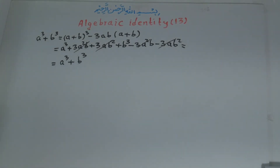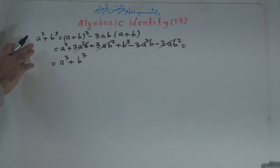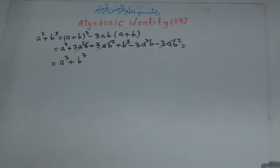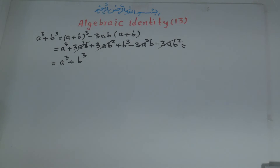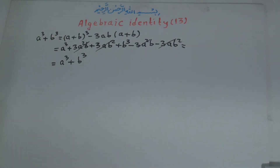That is exactly equal to the left side of the identity. So we have proved that a to the power of 3 plus b to the power of 3 is equal to a plus b, all to the power of 3, minus 3ab times a plus b.